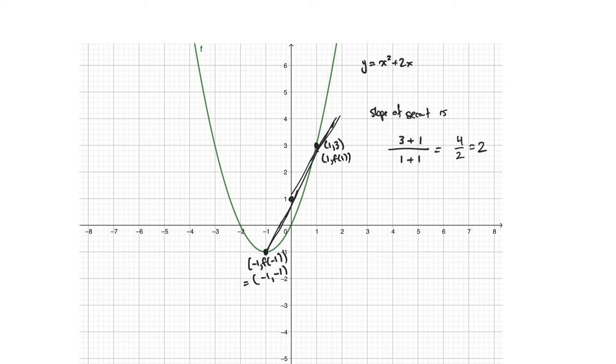And so what we'd like you to do is to do the same thing, but you're going to do it for two other points. All right, so that brings us to question one, is find the slope of the secant between 3 comma f of 3 and 5 comma f of 5.